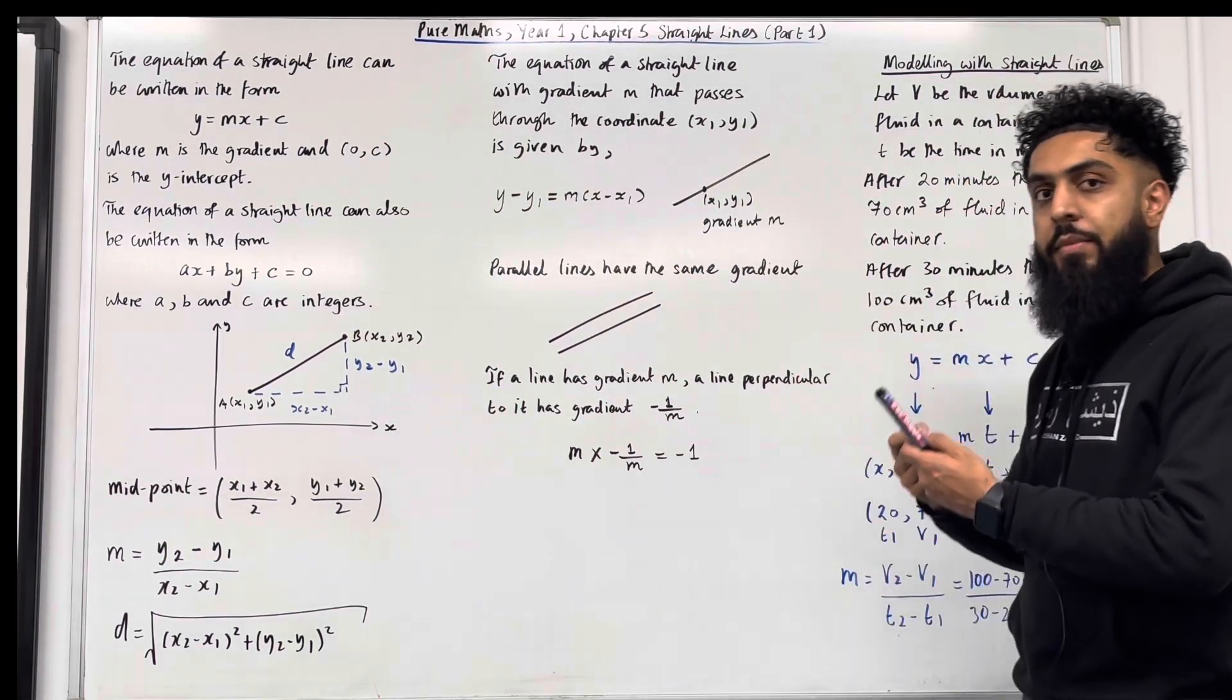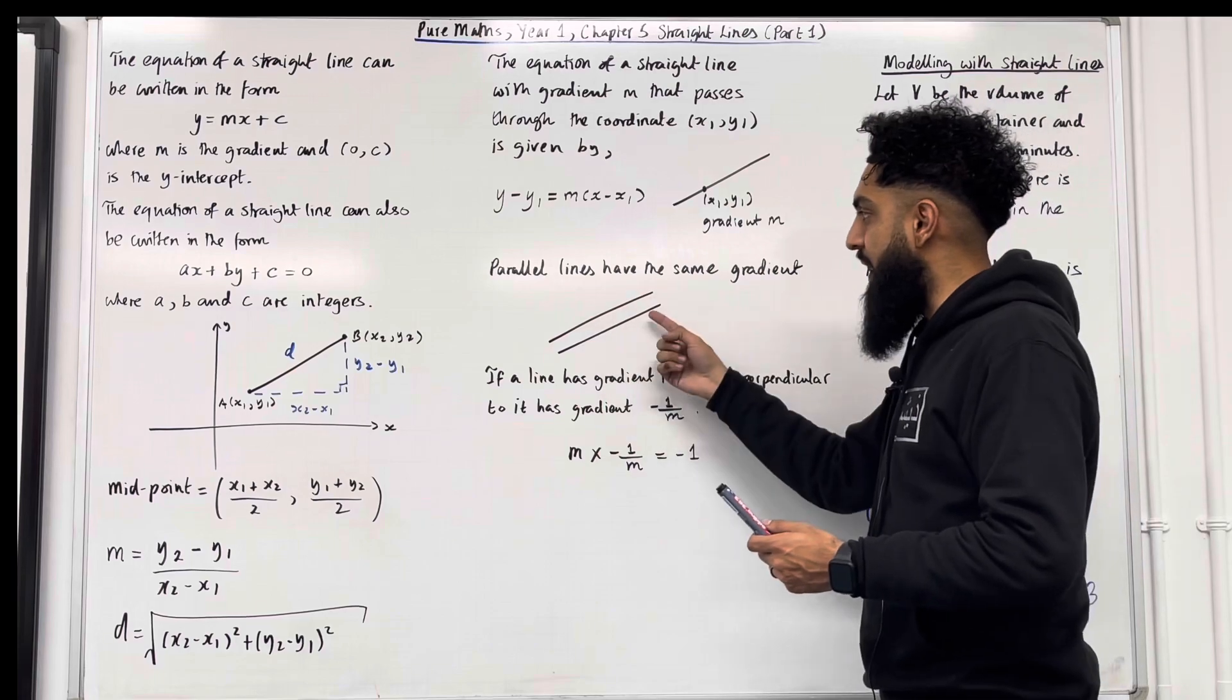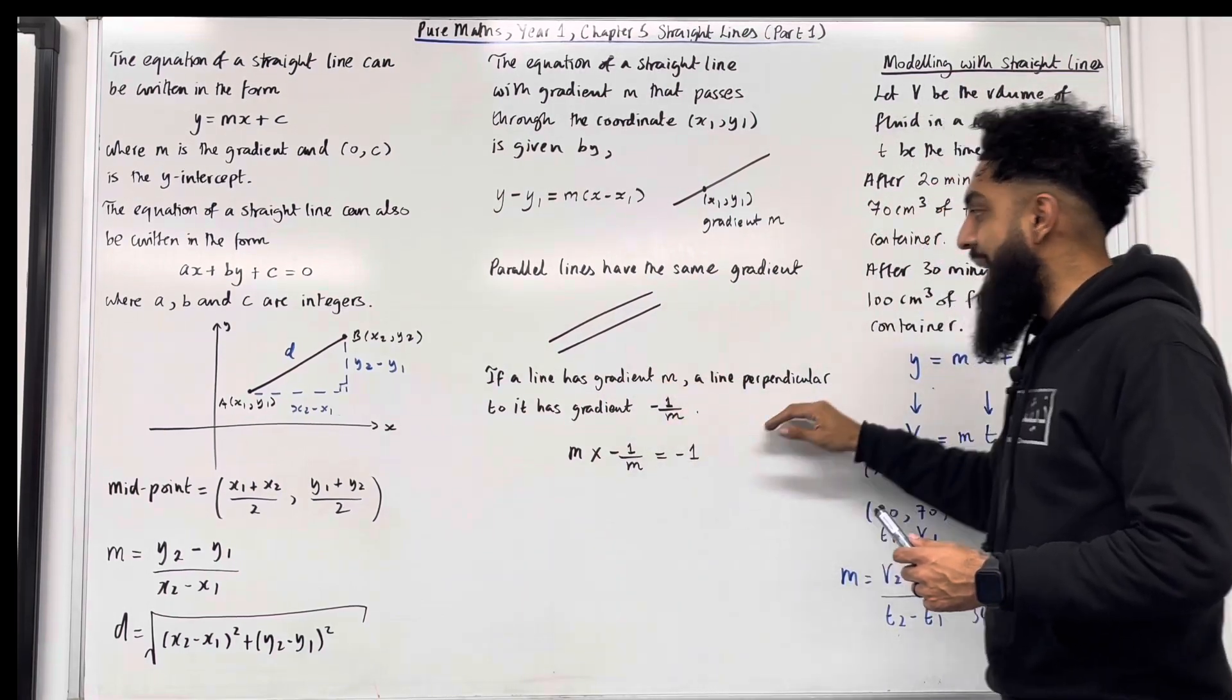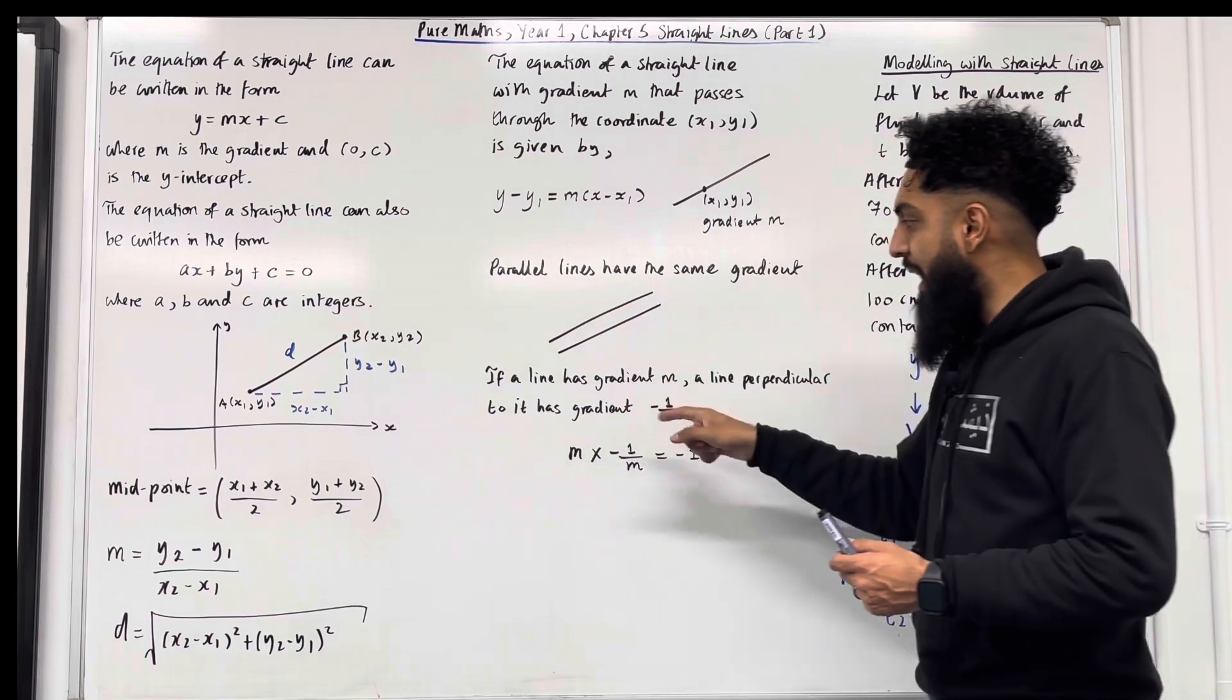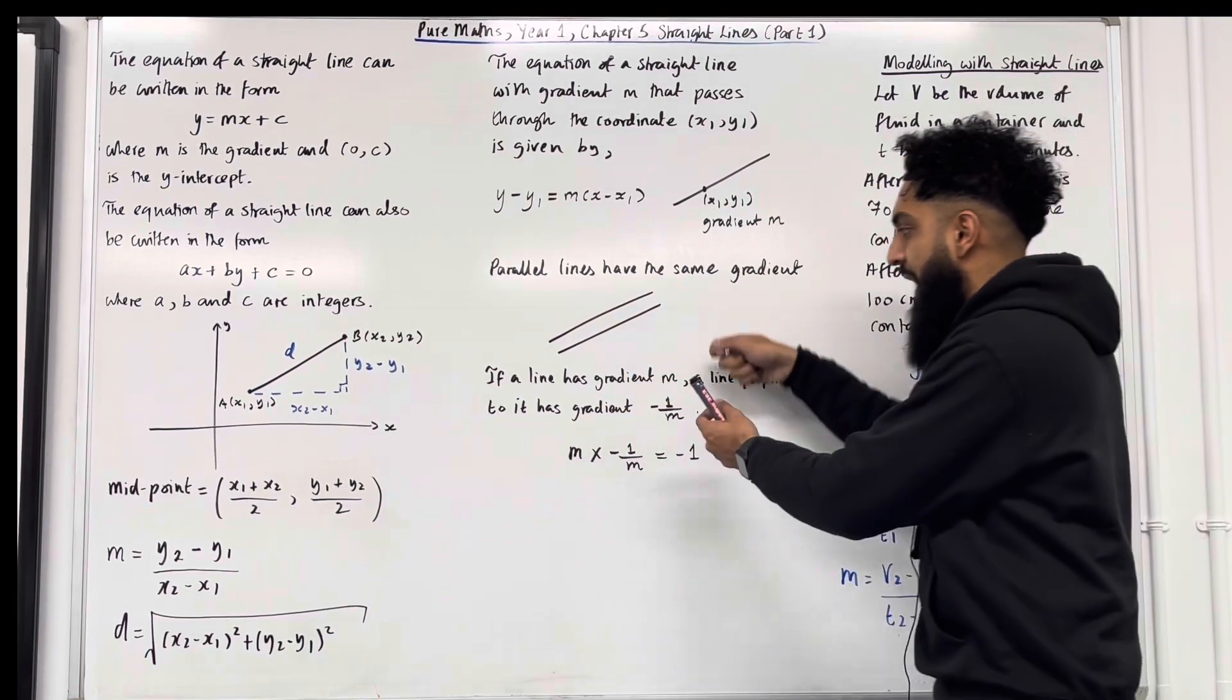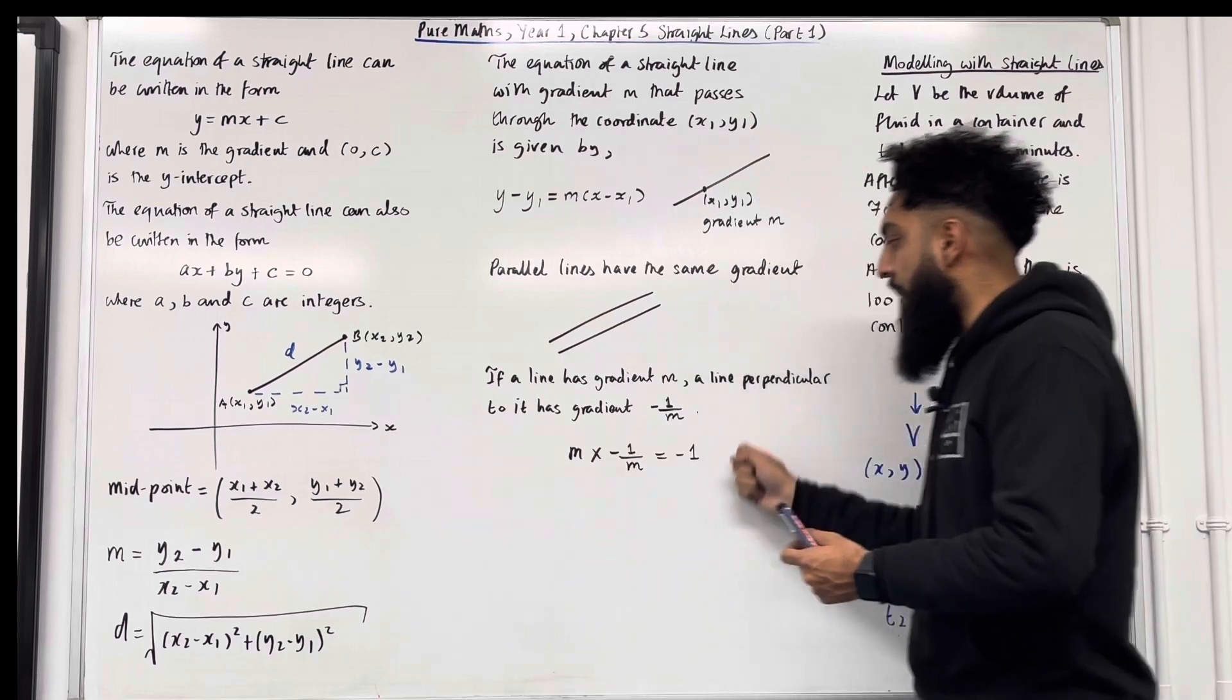Okay ladies and gents, parallel lines have the same gradient. The steepness is the same. If a line has gradient m, a line perpendicular to it has gradient minus 1 over m. If we take these two gradients and we multiply it, we get minus 1.